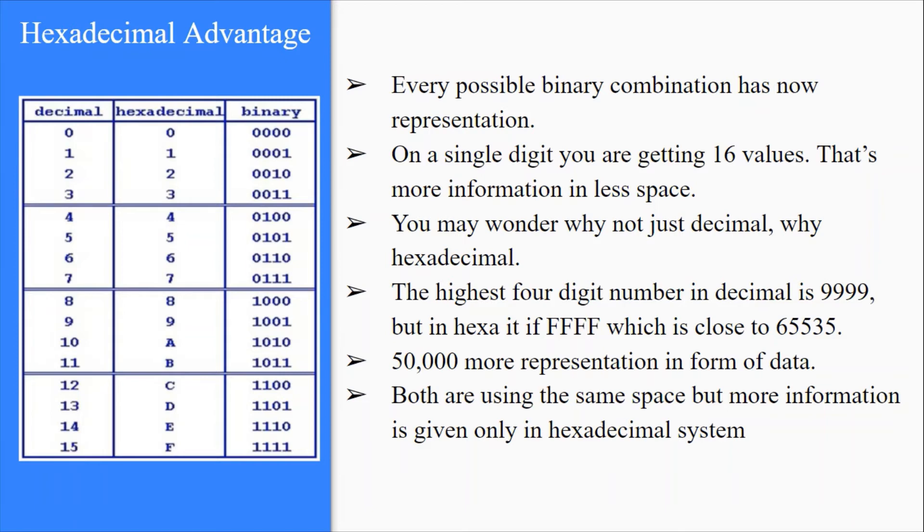What is the highest 4 digit number in decimal? It is 9999. But in hexadecimal it is FFFF, which is close to 65,535. Now I get 50,000 more representations or 50,000 more combinations of data. Both are using the same space, but I get more information only in hexadecimal number system.